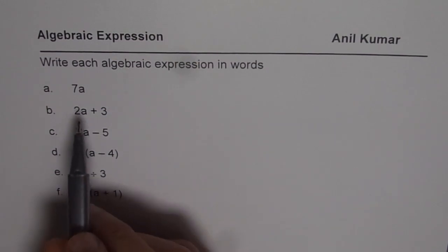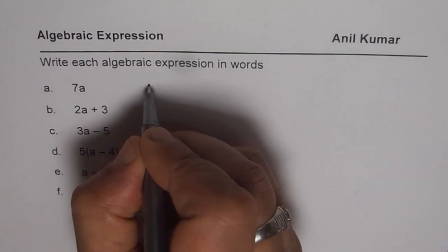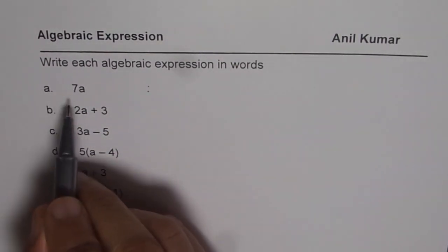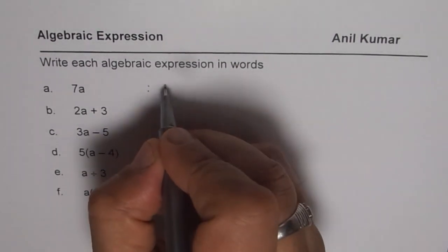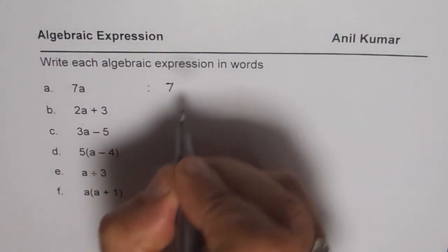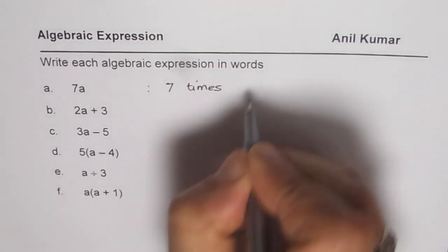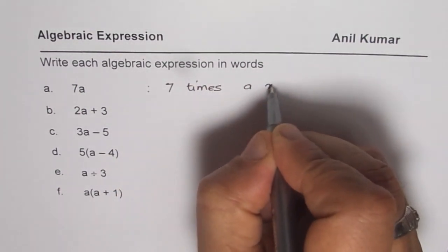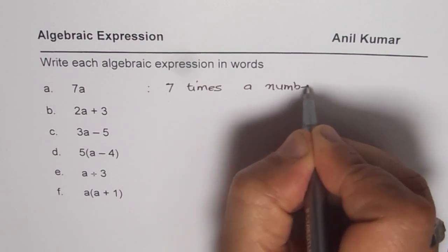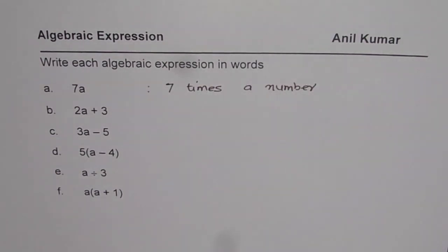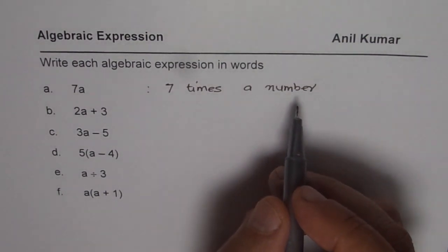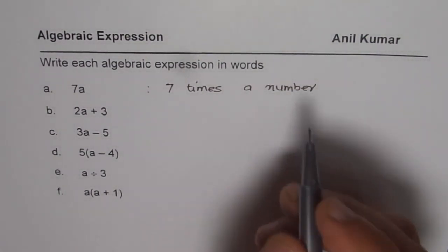So the first one here is 7a. We could write this as 7 times a number, so we can say this as 7 times a number. This is one way of writing this algebraic expression in words. We could also say product of a number with 7, but this is better.